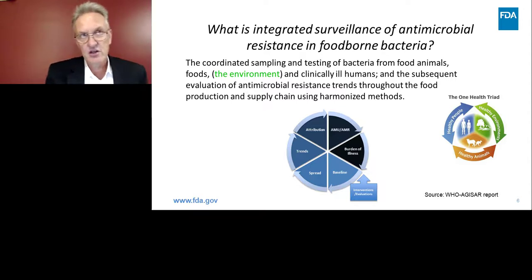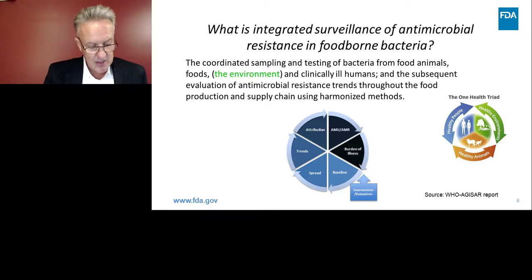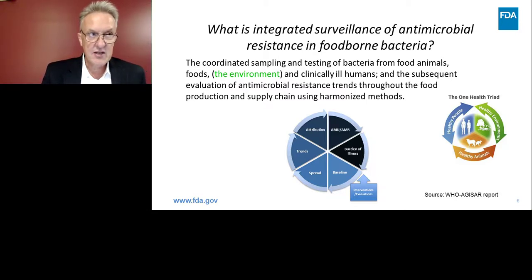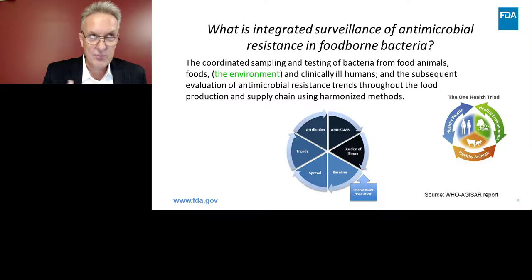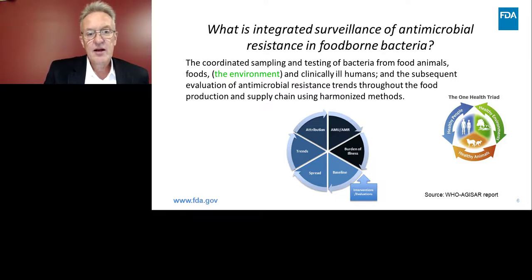A surveillance system that does this well goes out first and gets baseline information on the nature and magnitude of resistance in major commodities — in the United States, that's mainly beef, pork, chicken, turkey, and seafood. That baseline information is used to understand how things change over time. A key feature is whether things are getting better or worse — can we measure trends and put solid analysis behind them to determine when resistance, which is a natural biological phenomenon, is evolving into a medical problem requiring more urgent attention.